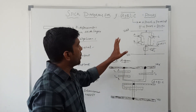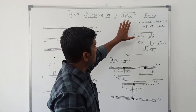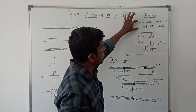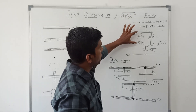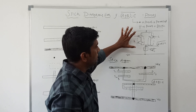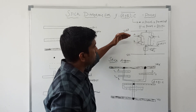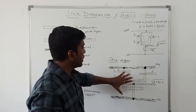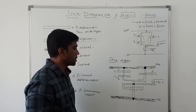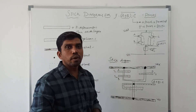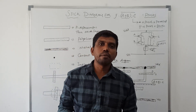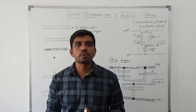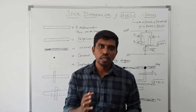First, find the operators in the boolean expression. Based on the boolean expression rules, fix the transistors in series or parallel. After drawing the logical diagram, we can draw the stick diagram accordingly. I hope you understand the concept well. If you are watching for the first time, kindly subscribe and support us. Thank you.